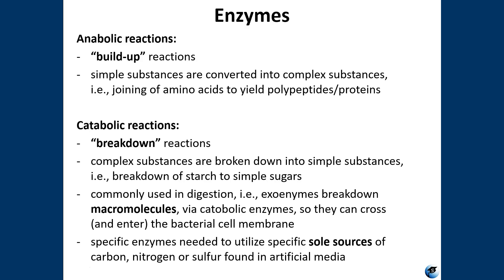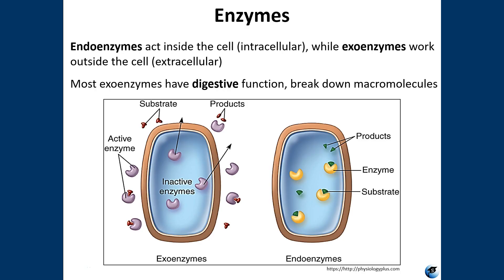Catabolism refers to exergonic pathways that break down complex molecules into simpler molecules. Catabolic enzymes break down macromolecules so they can cross and enter the bacterial cell membrane. Specific catabolic enzymes must be produced by microbes in order for them to utilize the only available sources of carbon, nitrogen, or sulfur in any given type of artificial media. Endoenzymes act inside the cell and exoenzymes work outside the cell.